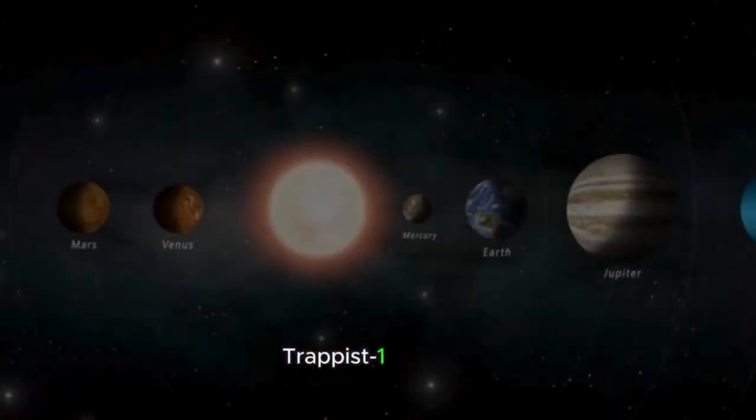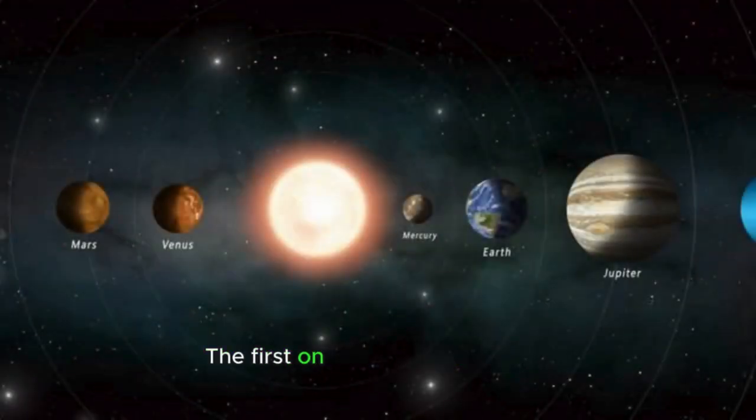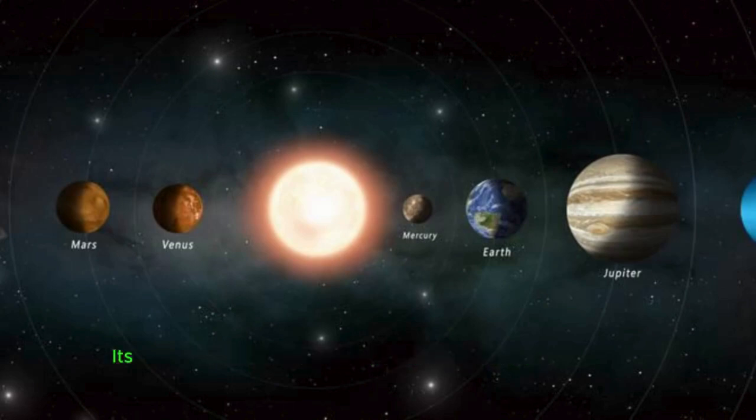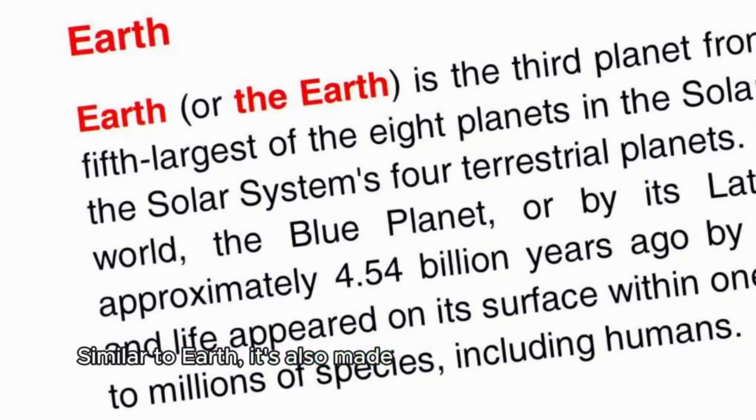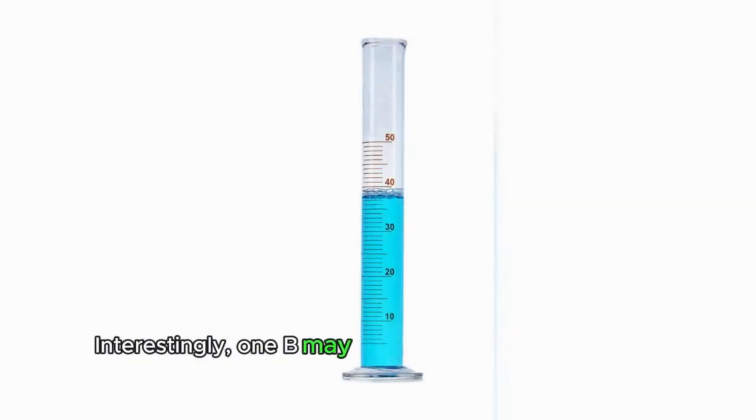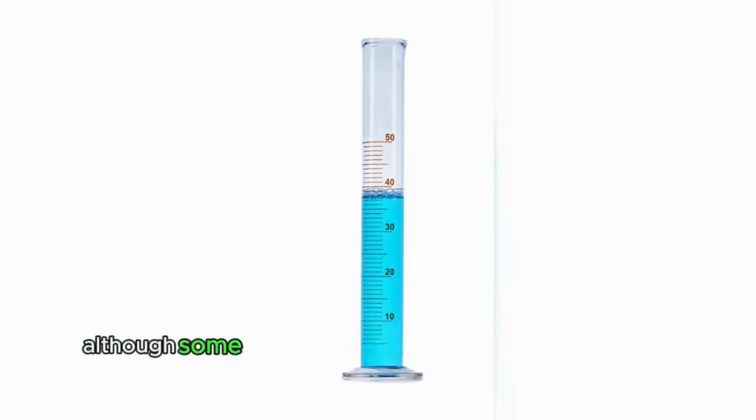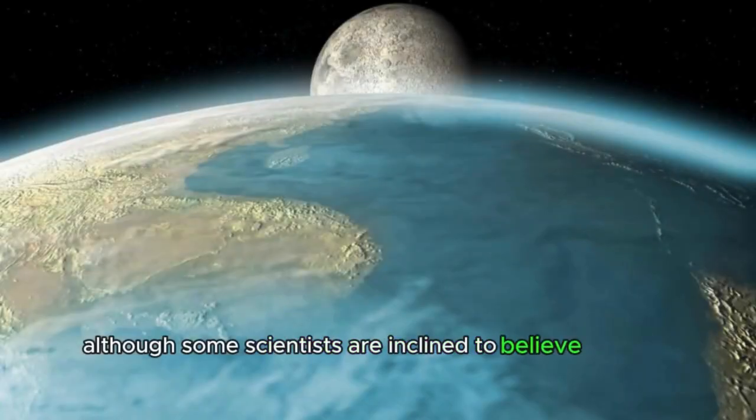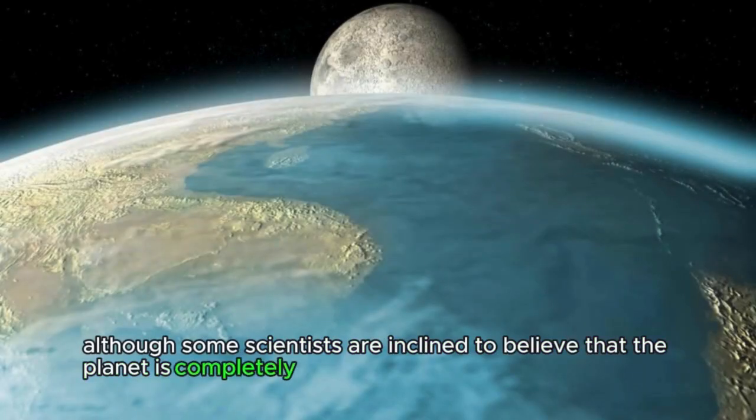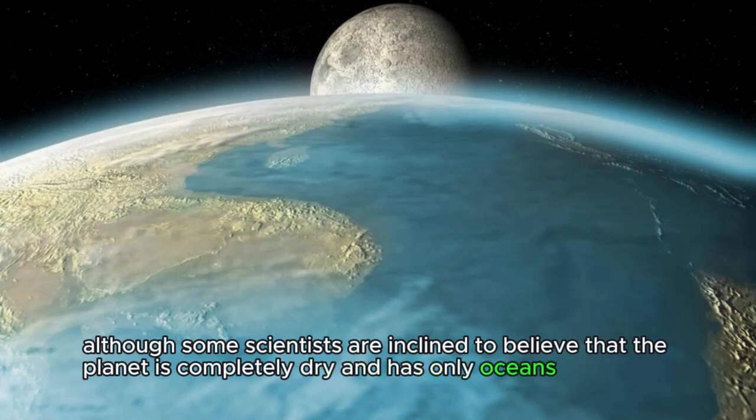TRAPPIST-1 planets. The first on the list is TRAPPIST-1b. Its radius is 10 times larger than the radius of Earth. Similar to Earth, it's also made of rock, iron, and likely ice. Interestingly, 1b may even contain a small layer of water, about 0.2% of its total mass. Although some scientists are inclined to believe that the planet is completely dry and has only oceans of magma.